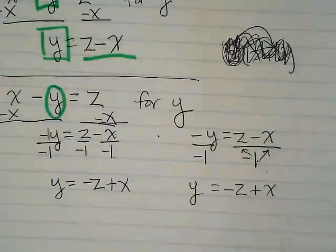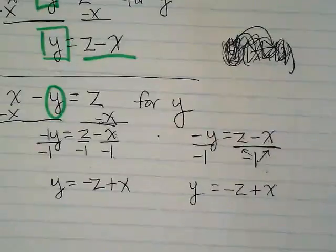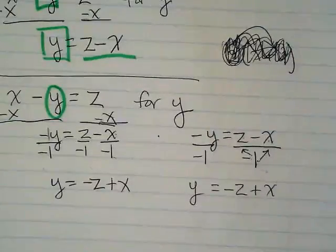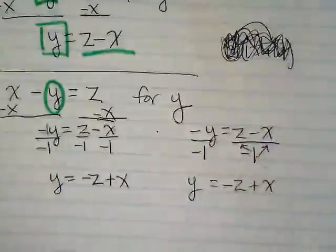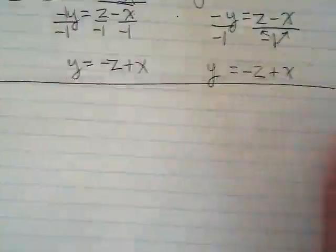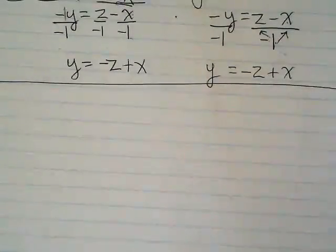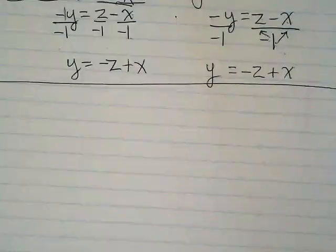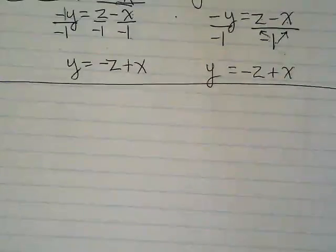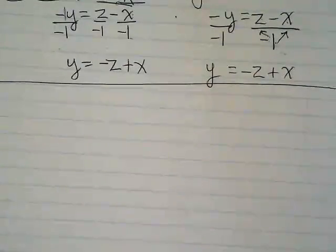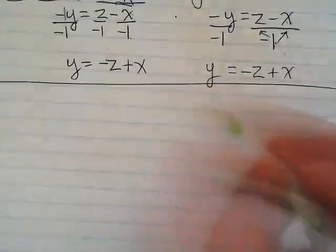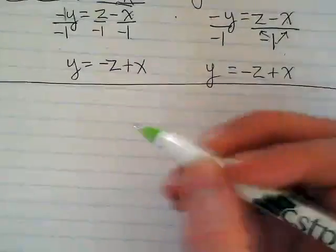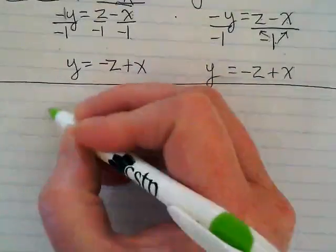This feels kind of different from what we normally do because we're not getting a number that's our answer. And sometimes we have numbers in these problems. That's what we're going to do next. And it feels like you should be getting this down to Y equals something that's just a number. But we're not doing that today. We're just getting the variable by itself. The one we've been told to identify.